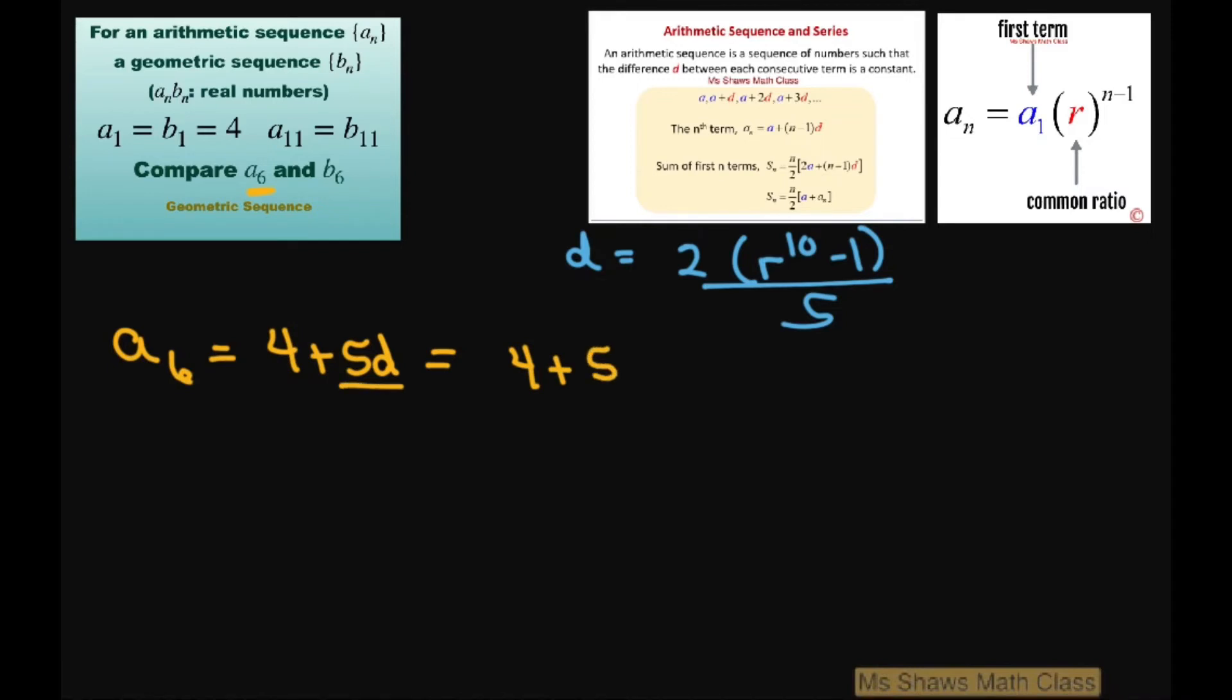That's going to equal 4 plus 5, and then we multiply it by d, substitute this d in, and that's going to give you 2 times r^10 minus 1, divided by 5. And what happens is the 5's cancel, so this is going to equal 4 plus 2 times r^10 minus 1.